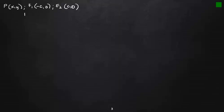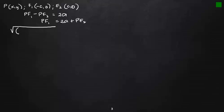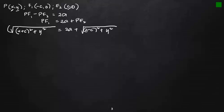We know that PF₁ − PF₂ equals 2a, so we can rewrite this as PF₁ = 2a + PF₂. Using the distance formula, from P to F₁ we have √[(x + c)² + y²] = 2a + √[(x − c)² + y²]. Squaring both sides to remove the radical signs, we get (x + c)² + y² on the left side.